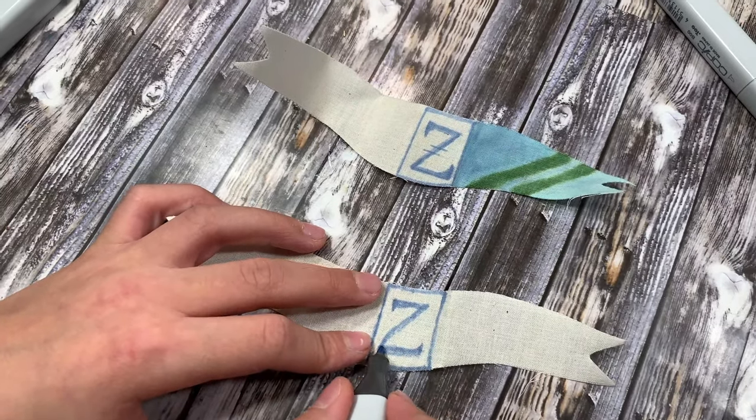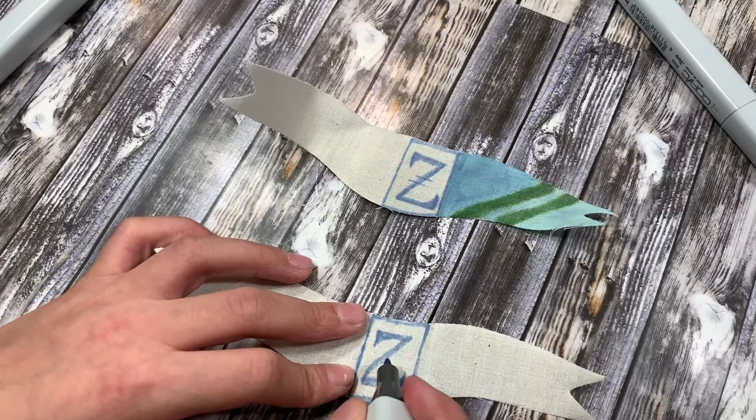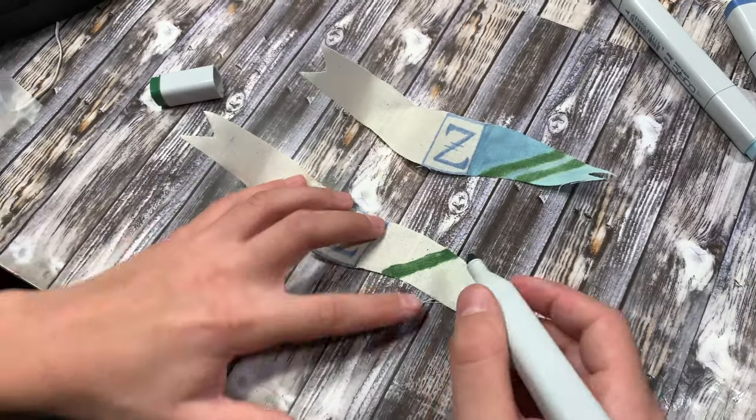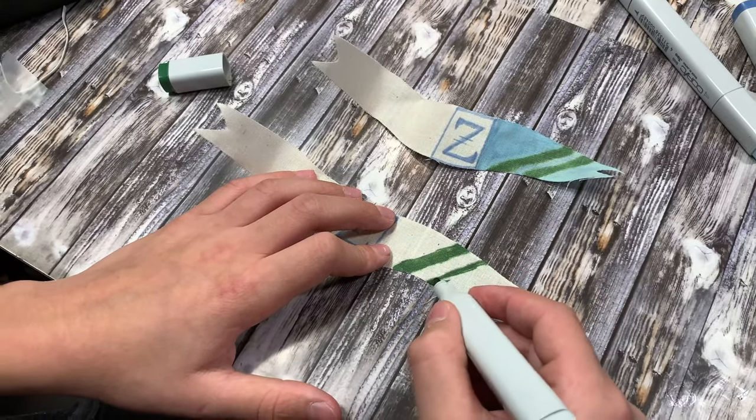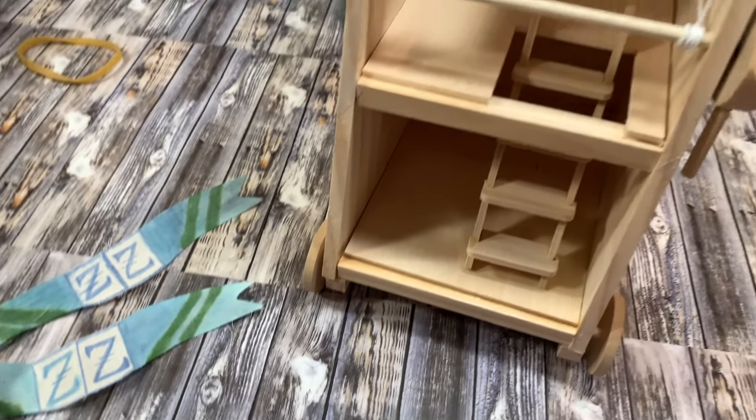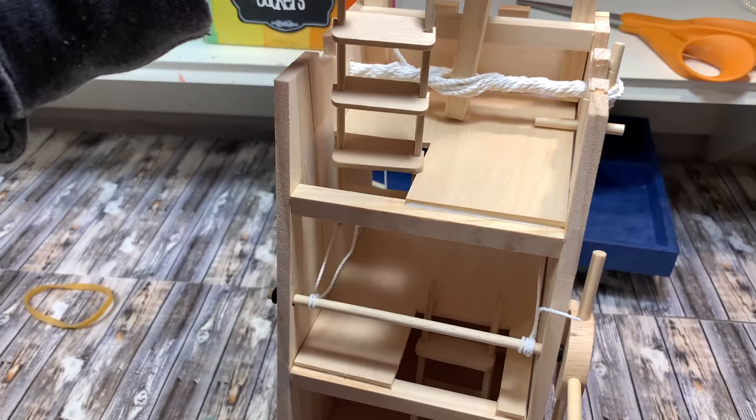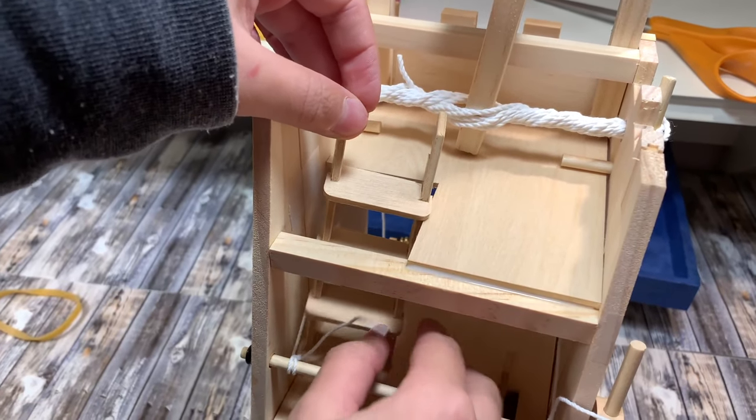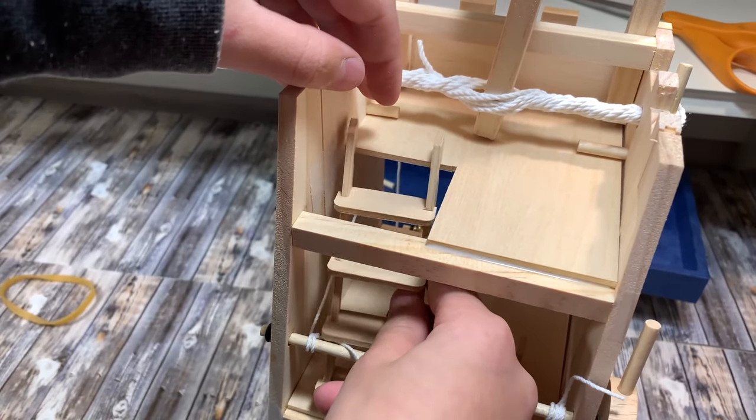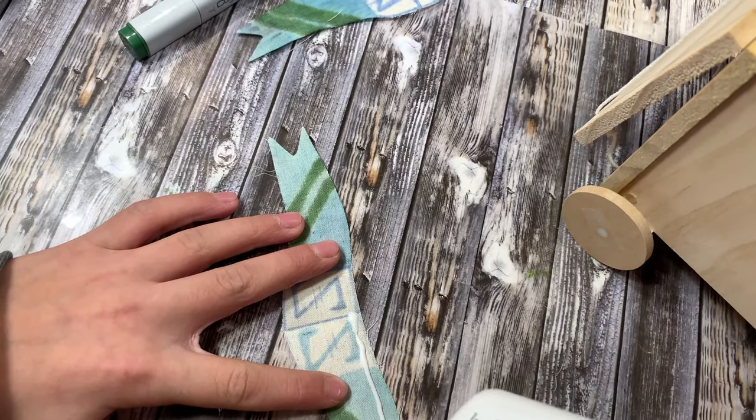So now we get to do the fun artistic thing and that is to decorate our flags and my son chose the letter Z and then he's just doing a couple other decorative things. I did one of them to give him an idea on what he could copy since he was at a loss creatively and that was okay, that was my contribution to this project and I enjoyed being able to help him with that.